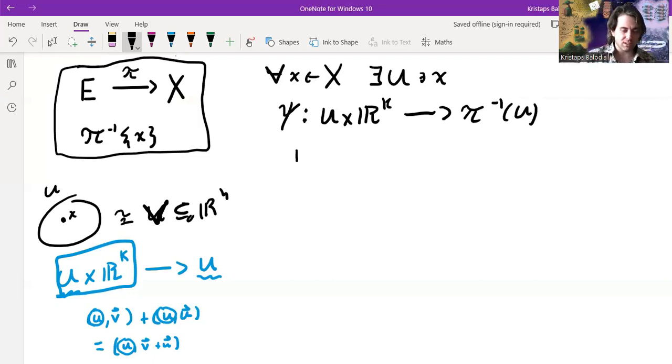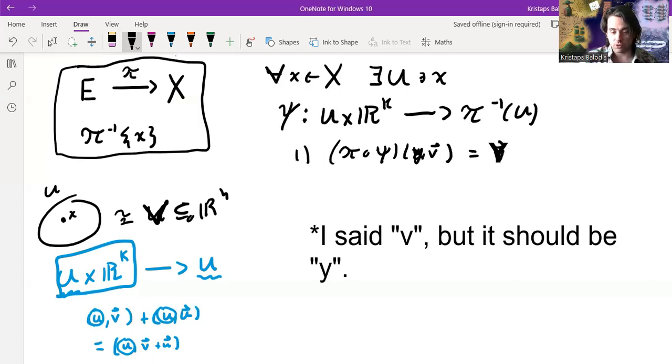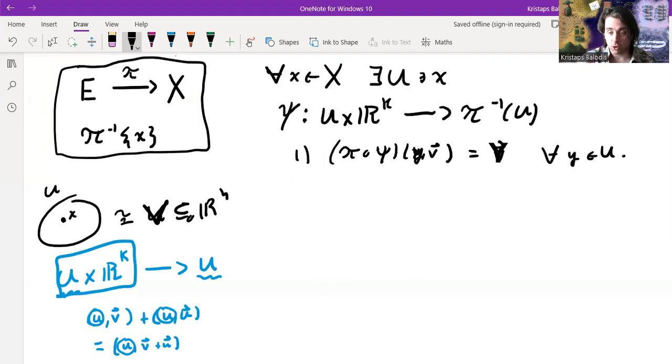And it needs to be subject to some conditions. So π composed with ψ applied to (x, some vector), really I should say y, some vector, is equal to y for all points y in this open set. So that's just saying, again, that's just sort of like the definition of a section, right? It's just making sure we have some sort of coherence condition and making sure each of those things stay in the fibers.